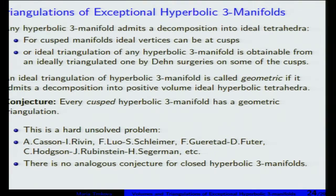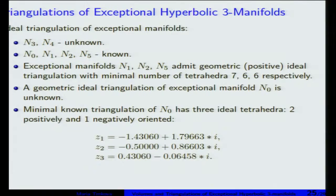This conjecture about geometric triangulations is still open. There have been many papers on it — Casson and Rivin, Luo-Schleimer, Gueritaud-Futer, Hodgson-Rubinstein-Segerman. But there is no such conjecture for closed manifolds — it's probably not true. Let's look at ideal triangulations of our exceptional manifolds. For two of them we don't know the ideal triangulation; for the others we do, because those are in SnapPy's census. Three of these manifolds — N1, N2, and N5 — experimentally have a geometric triangulation, with a minimal known number of tetrahedra being 766. But for manifold N0, also called Vol3, a geometric triangulation has not been found — it's still an open question. The best known triangulation for this manifold uses three tetrahedra: two positive and one negative.